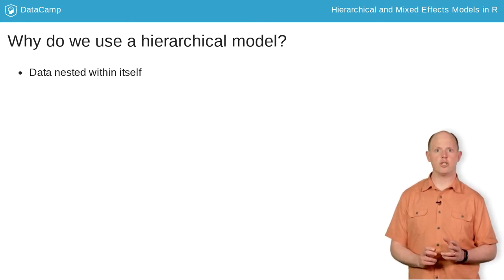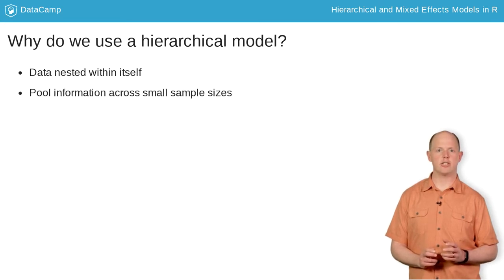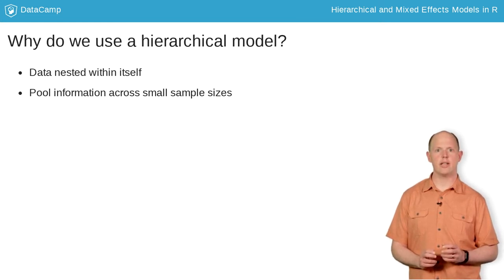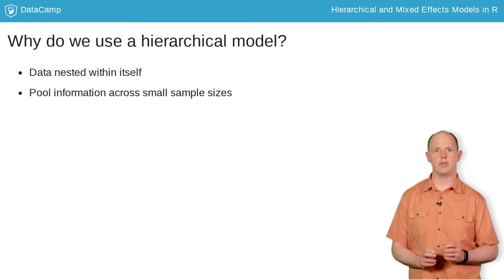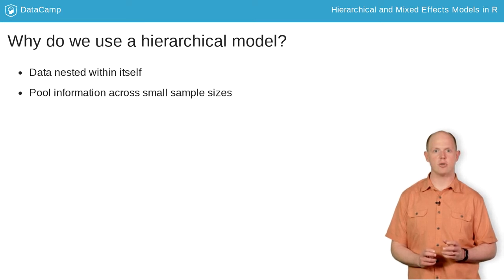Additionally, what if each classroom has a different number of students? For example, maybe the fifth grade has 30 students while the third grade only has five. By chance alone, the third grade test scores are more likely to have high or low outliers because of the law of large numbers. By treating classrooms as a random effect within the model, we can pool shared information about the means across the classrooms within the same school.